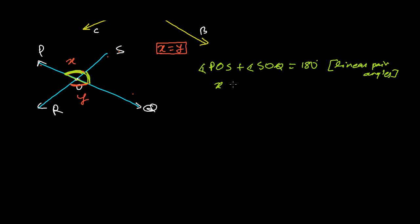So now POS is actually X, plus SOQ - that is 180. So I can say that angle SOQ is 180 degrees minus X. So how much we got? We get 180 minus X.